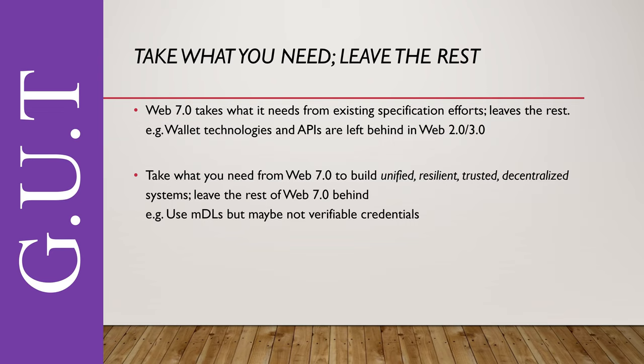That tagline ties in with the grand unity theorem in two ways. First, Web 7.0 takes what it needs from existing specification efforts — from W3C CCG, DIF, TOIP, and Hyperledger working groups — and leaves the rest. For example, Web 7.0 has nothing to do with wallets and APIs, which are unnecessary in a pure agent-based model. Second, from a consumption perspective, you don't have to use all of Web 7.0 — use what you need to build resilient, decentralized systems and leave the rest.